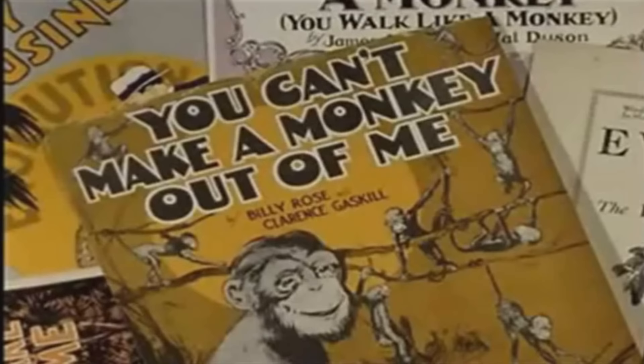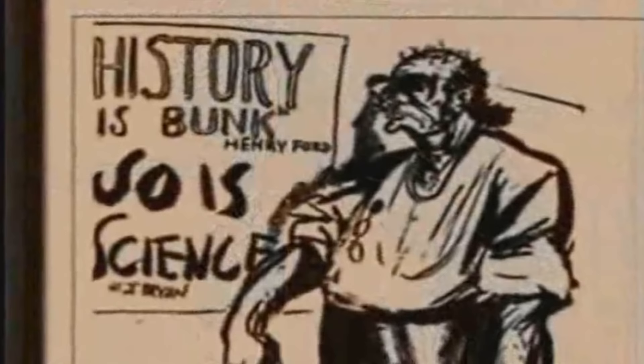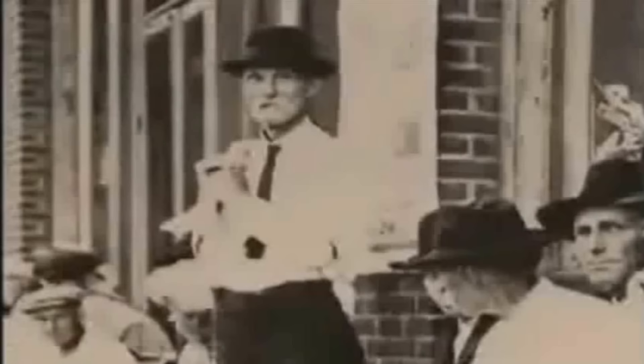The Scopes trial had several different ramifications. The trial had an immediate impact on public school classrooms — throughout the 1920s and 30s, biology textbooks eliminated references to evolution in an attempt to avoid controversy. Additionally, the trial highlighted the growing religious fundamentalist movement in America, as well as the changing American culture.